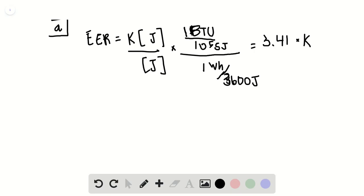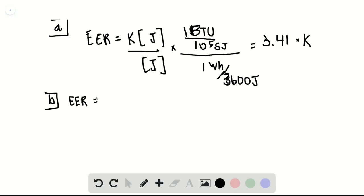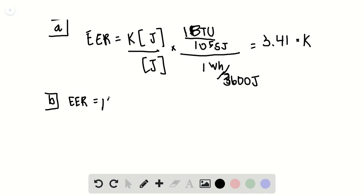You just do K times 3.41, and that comes in handy in the next problem. So you need to calculate the EER for, was it an AC? I think it was, yeah, an AC. That operates between 95 and 80. So it's K times 3.41, and then K, if you go to the formula in the book, chapter 20, I think it's at the end.